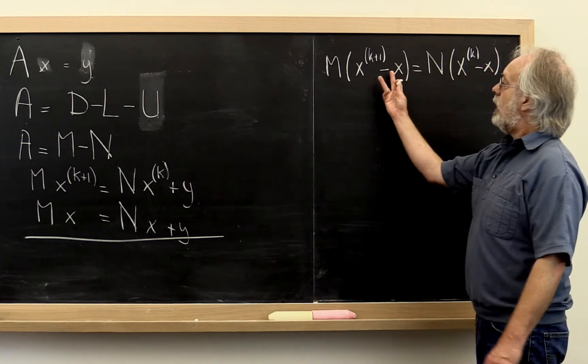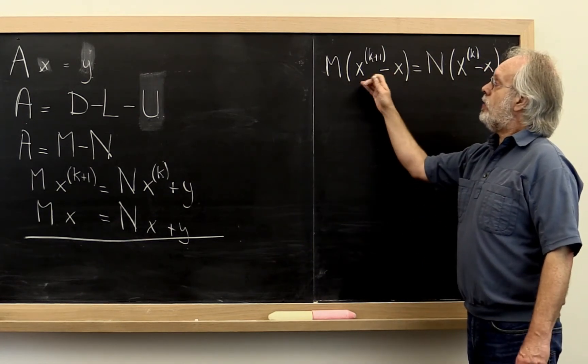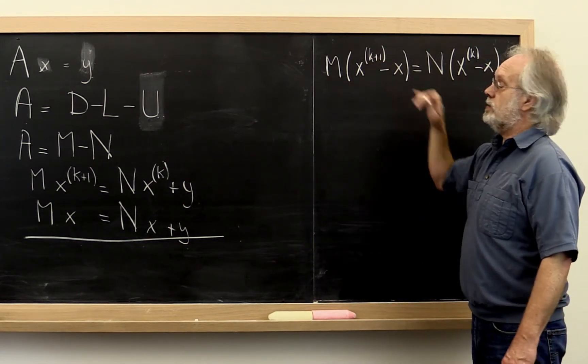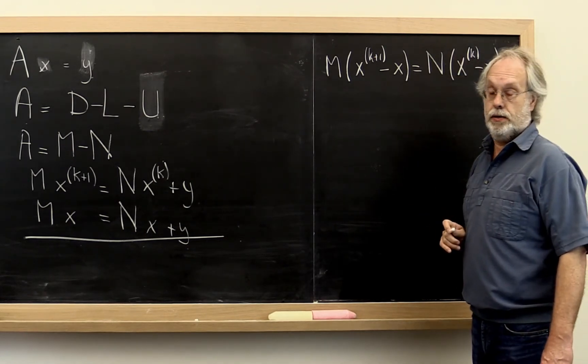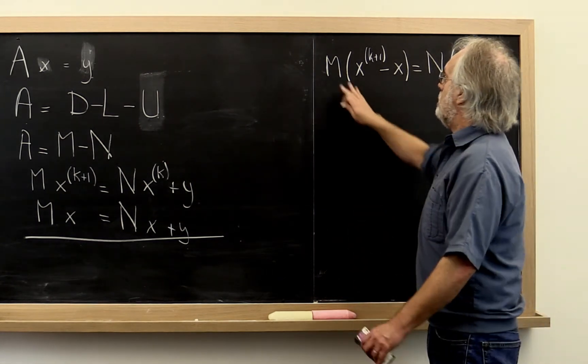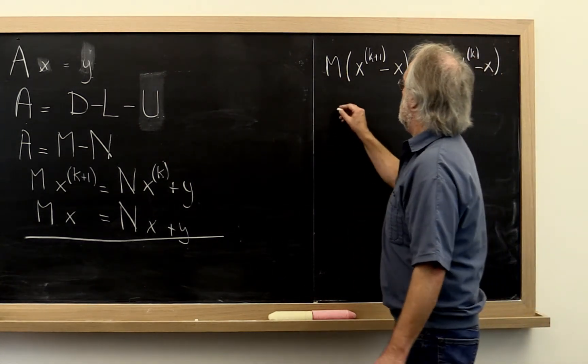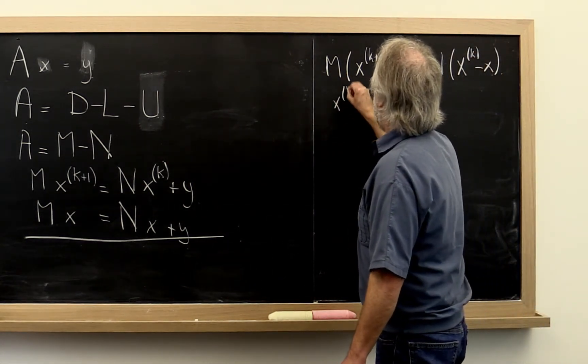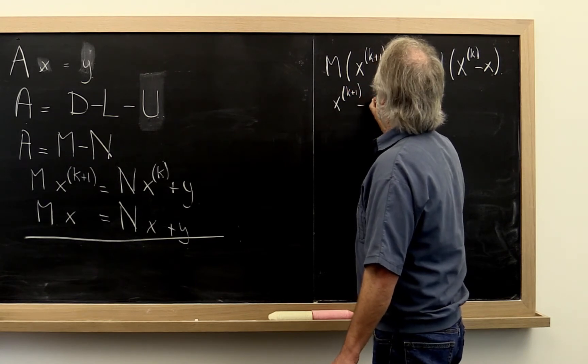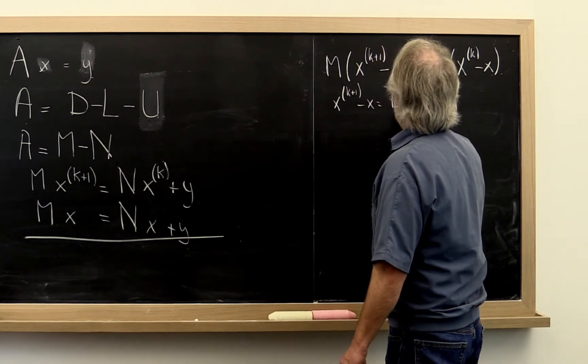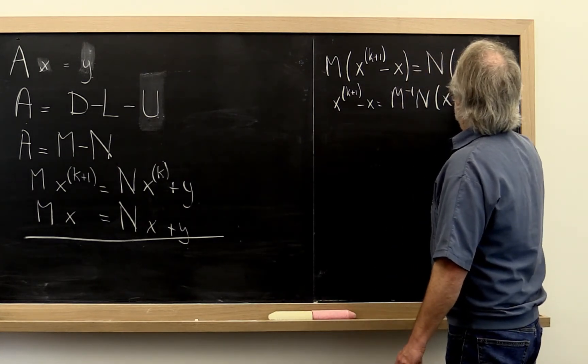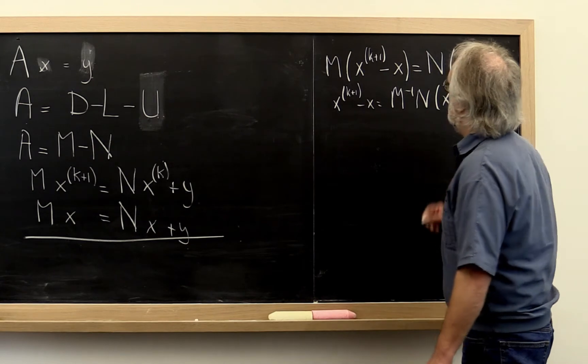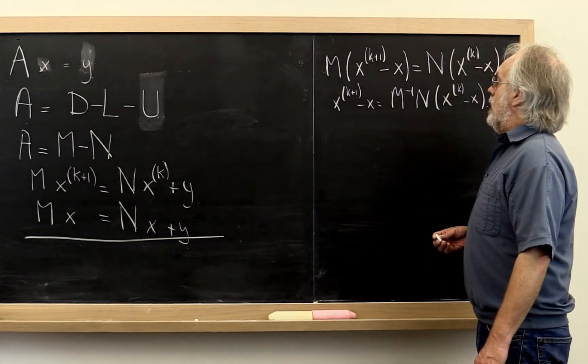And this is good because now we're talking about how close is X_{k+1} to X relative to how close X_k was to X. And then it actually becomes beneficial to bring M to the other side. So we get that X_{k+1} minus X is equal to M inverse times N times X_k minus X.